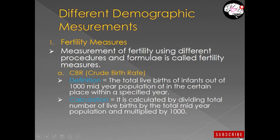How is CBR calculated? It is calculated by dividing the total number of live births by the total mid-year population, then multiplying by one thousand. Please focus on 'live births.' The definition and calculation are related: the definition states 'total live births of infants out of a thousand mid-year population in a certain place within a specific year,' and from that you can directly derive the calculation.